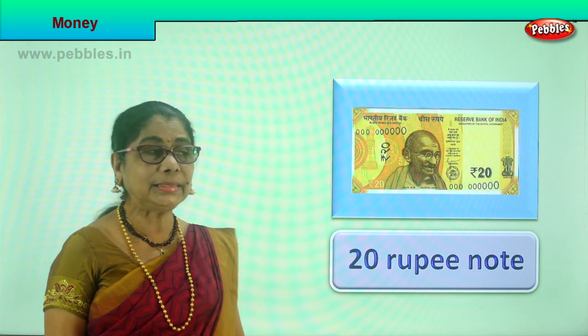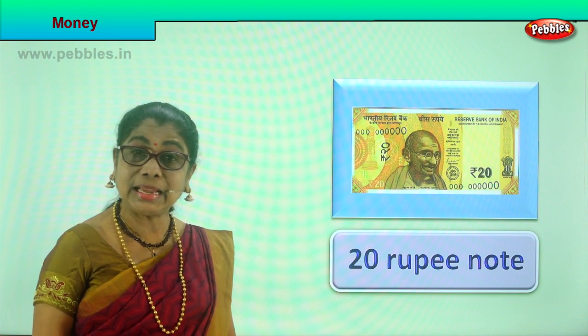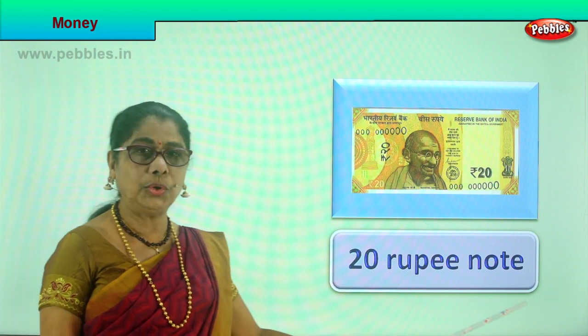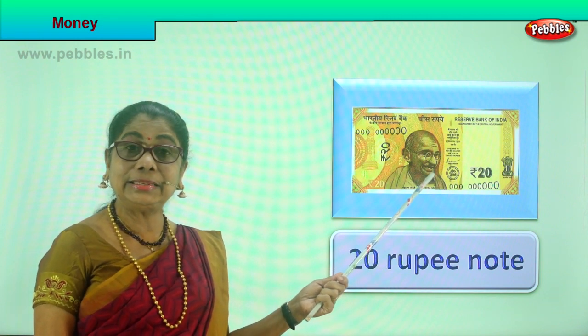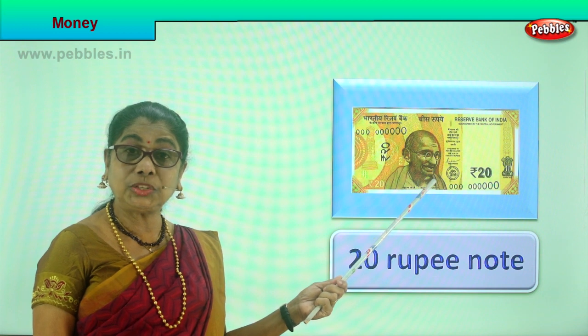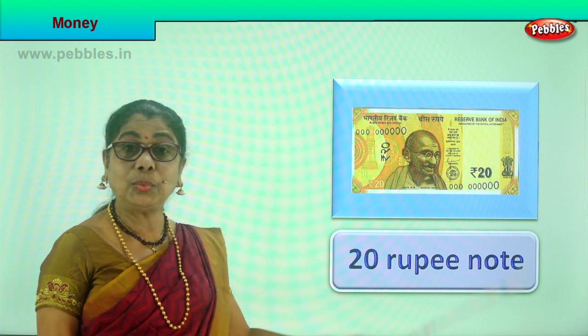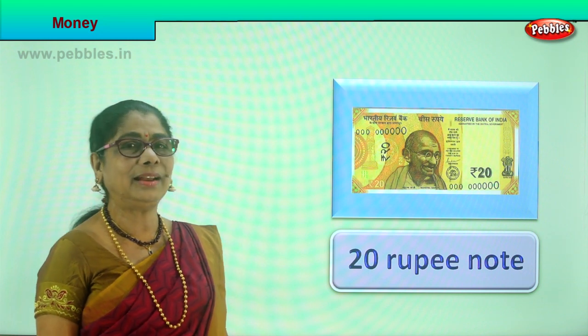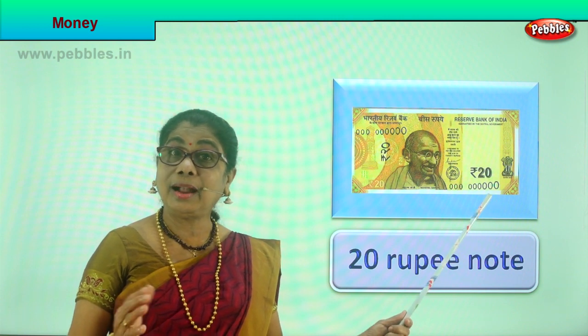Let's look at the next value in paper money. You have a nice pista green note written 'rupees twenty'. This is the twenty rupee note — the next higher value than the ten. It's a lovely pista green color, you cannot miss it.